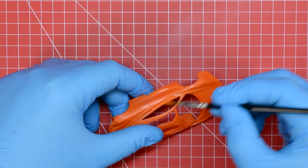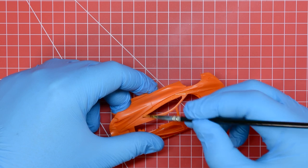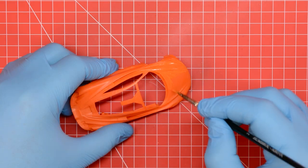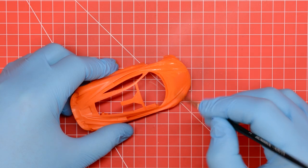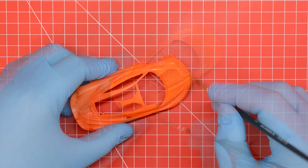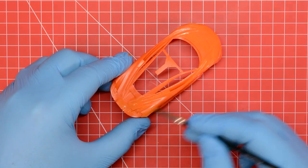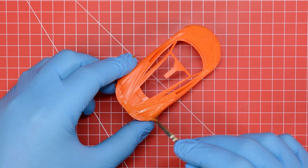We then gave the orange paint supplied with the kit a good stir, diluted it 30% with tap water and then gave the whole body shell, the rear bumper and the rear spoiler two nice even coats of gloss orange, allowing each layer to dry fully in between.